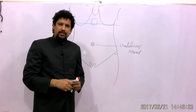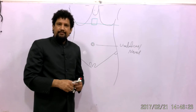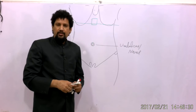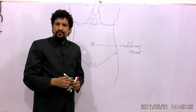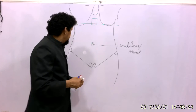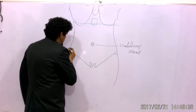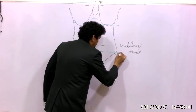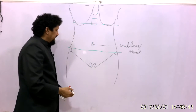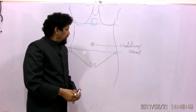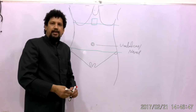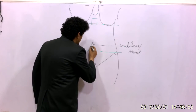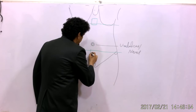The second horizontal imaginary plane is the transtubercular plane, passing through the two tubercles of the iliac crest. This plane passes through the upper border of the L5 vertebra.